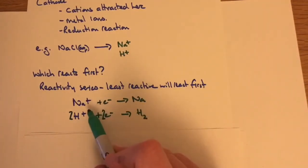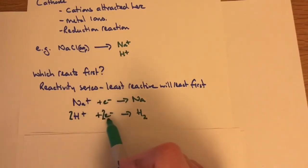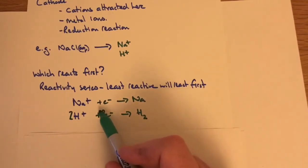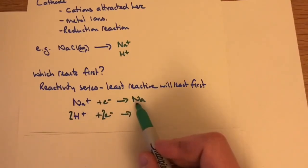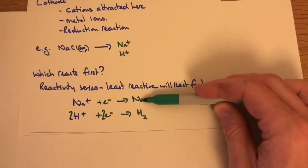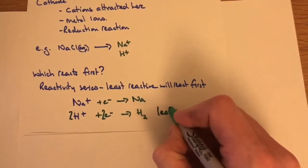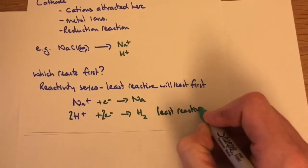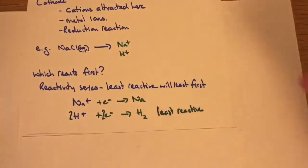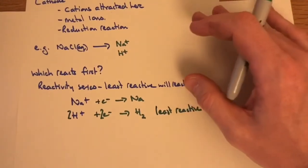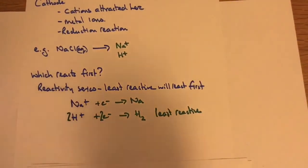Because both ions are going to gain electrons at the cathode, we think about reactivity. Hydrogen, being less reactive, is easier to make gain electrons. Sodium, arriving at the cathode, is very reactive and doesn't want an electron — it wants to stay as an ion. So sodium won't react first. The hydrogen reacts first because it is the least reactive. At the cathode it is always the least reactive of the two ions that reacts first.